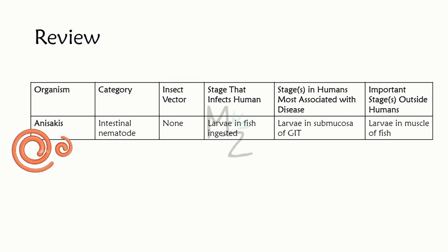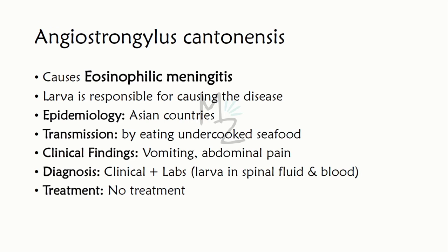The last parasite in the series is Angiostrongylus cantonensis, the rat lung nematode, responsible for causing eosinophilic meningitis. Meningitis is inflammation of the meninges — the three protective membranes covering the brain: dura mater, arachnoid mater, and pia mater. Eosinophilic meningitis is characterized by many eosinophils in spinal fluid and blood — usually at least 10% of white blood cells are eosinophils.